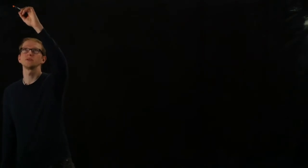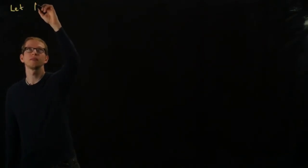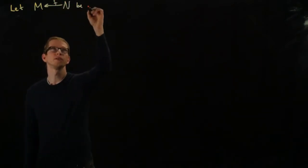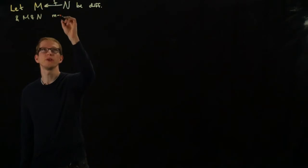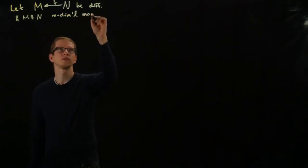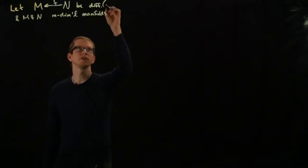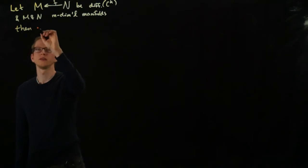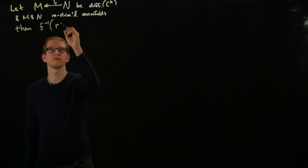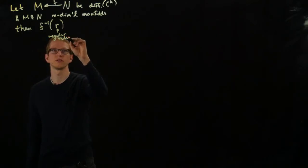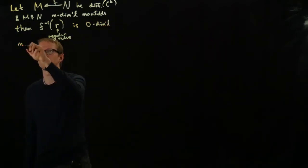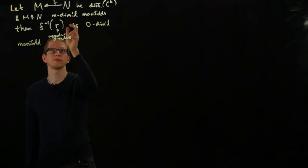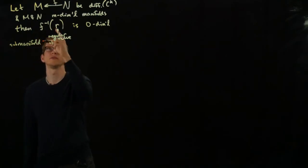In particular, if the dimensions happen to be the same, so let F be differentiable, and M and N both m-dimensional manifolds. And by differentiable I mean here C^k for some k. Then the inverse image of a regular value for F, so here R is a regular value, is a zero-dimensional manifold. In fact, it's a sub-manifold of N.